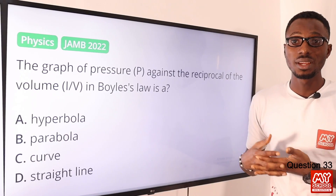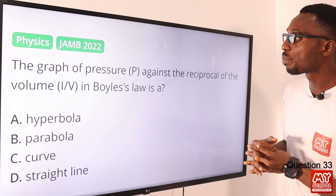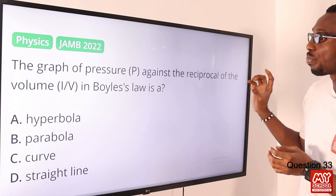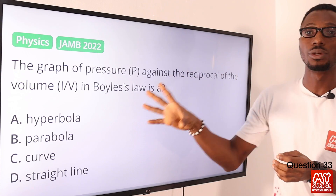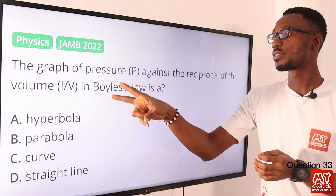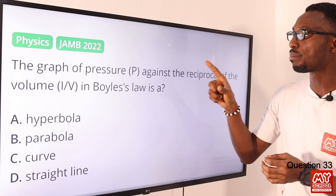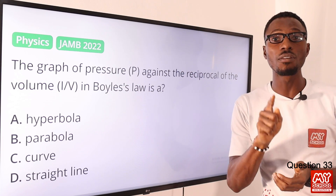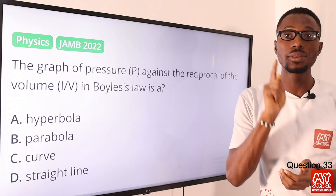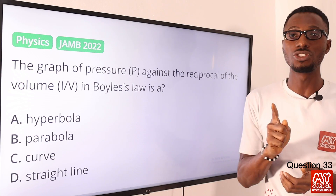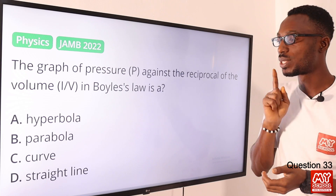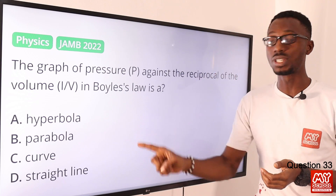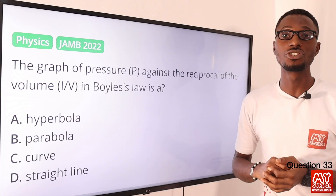Number 33. The graph of pressure P against the reciprocal of volume — the inverse of volume — in Boyle's Law is a straight line passing through the origin. The correct option is option D for a straight line.